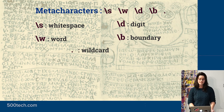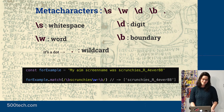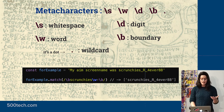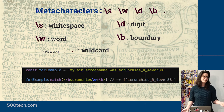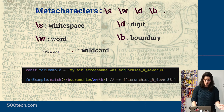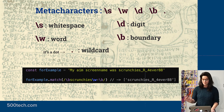And then there's the wild card — it's a dot. Using these, if my screen name was 'scrunchiesareforever88' — it wasn't, it wasn't that cool — I could run this regex pattern and it would return just my screen name, because it wraps in the boundaries and captures any word characters plus underscores and numbers.